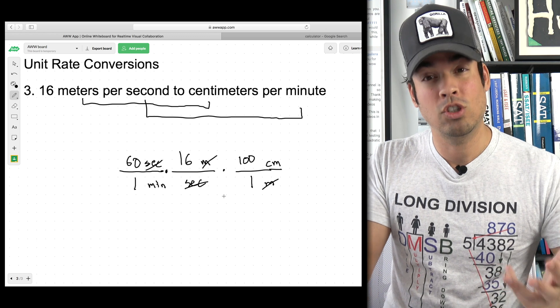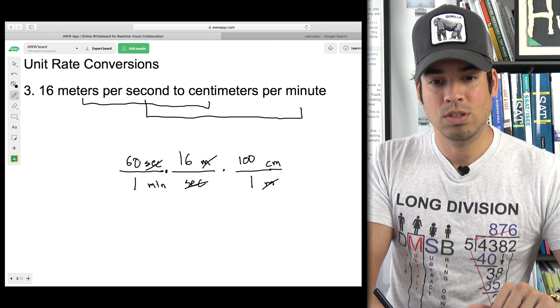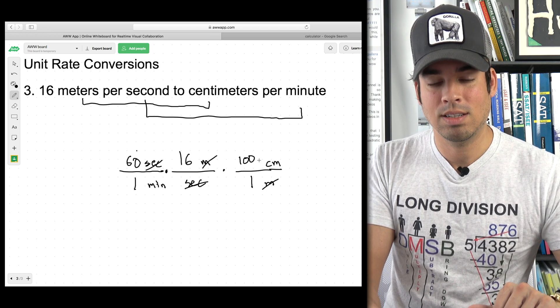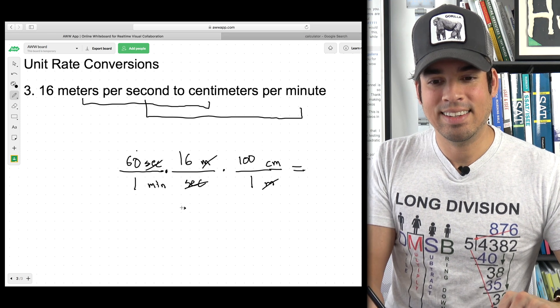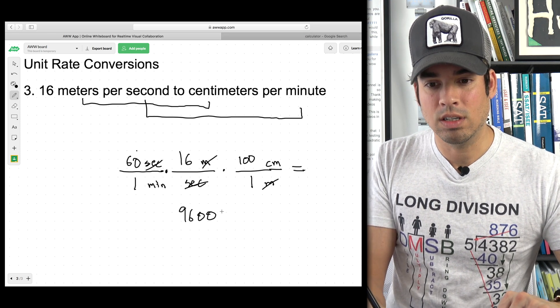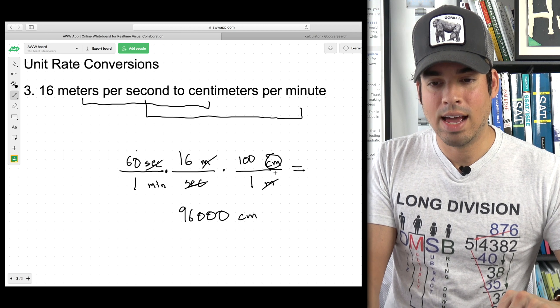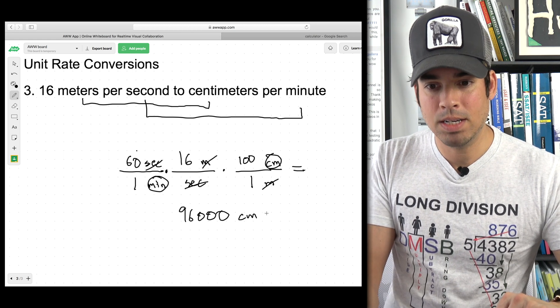Now all we got to do is multiply across. And we only got ones on the bottom, which is great. So that's super simple. So it's 60 times 16 times 100. And that gets us 96,000 centimeters per minute.